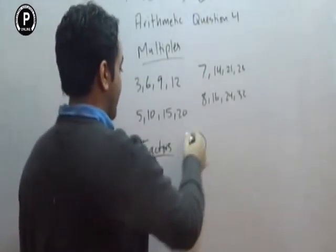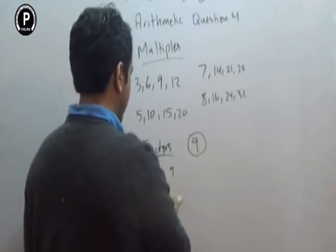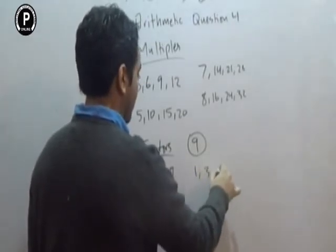If I give you a number which is 9, what are the factors of 9? 1 times 9 is 9. 3 times 3 is 9. So the factors of 9 are 1, 3, 9.